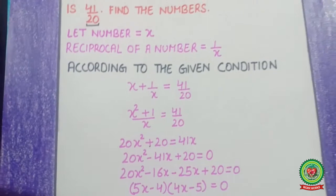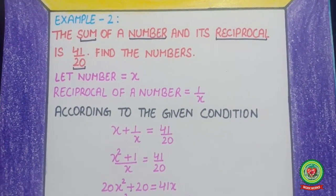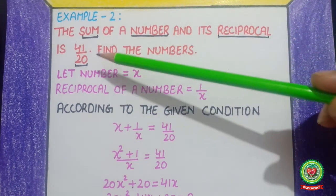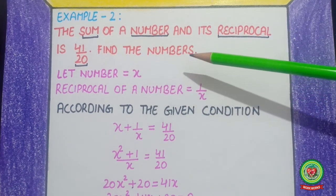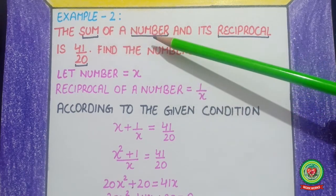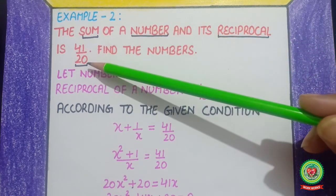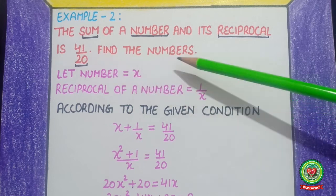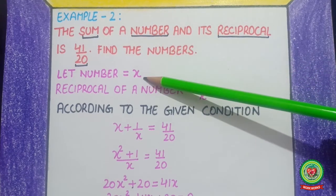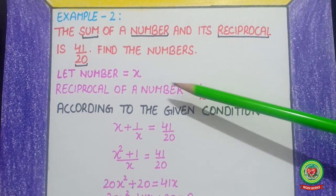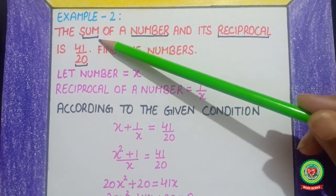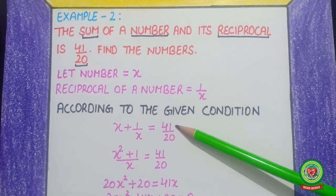Now, example number 2: The sum of a number and its reciprocal is 41 upon 20 — find the numbers. The keywords are: sum, a number, reciprocal is 41/20, and we have to find the numbers. Let the number be x, so the reciprocal of the number is 1 upon x. According to the given condition, the sum of both equals 41 upon 20.